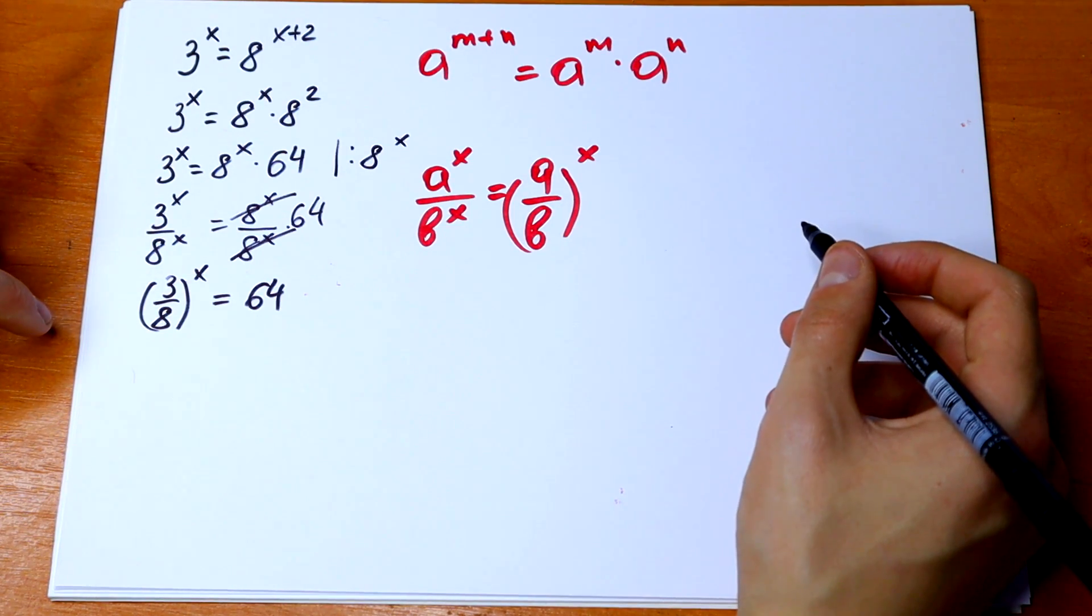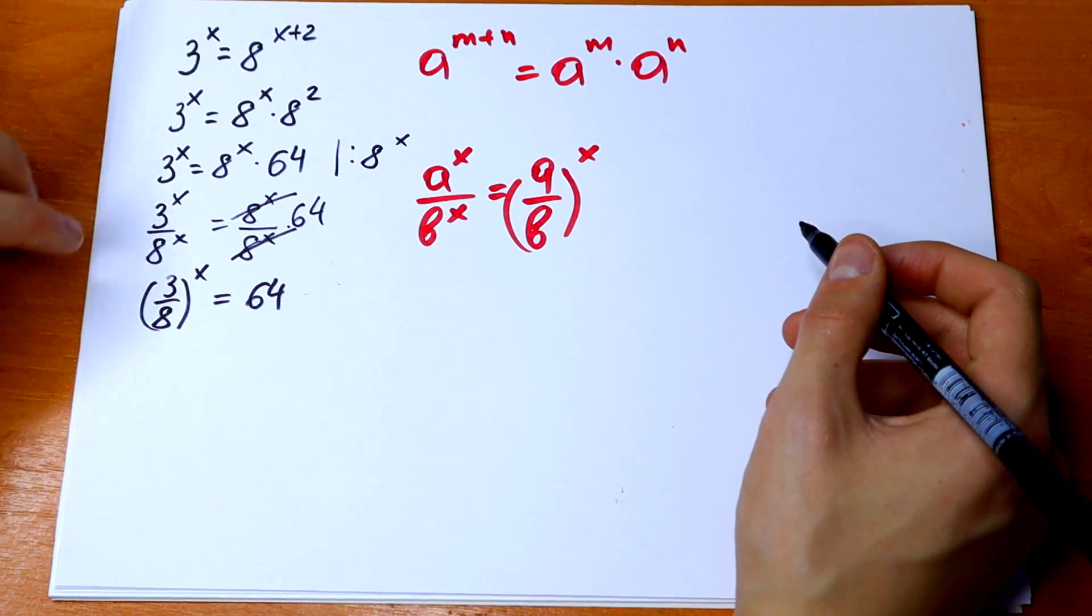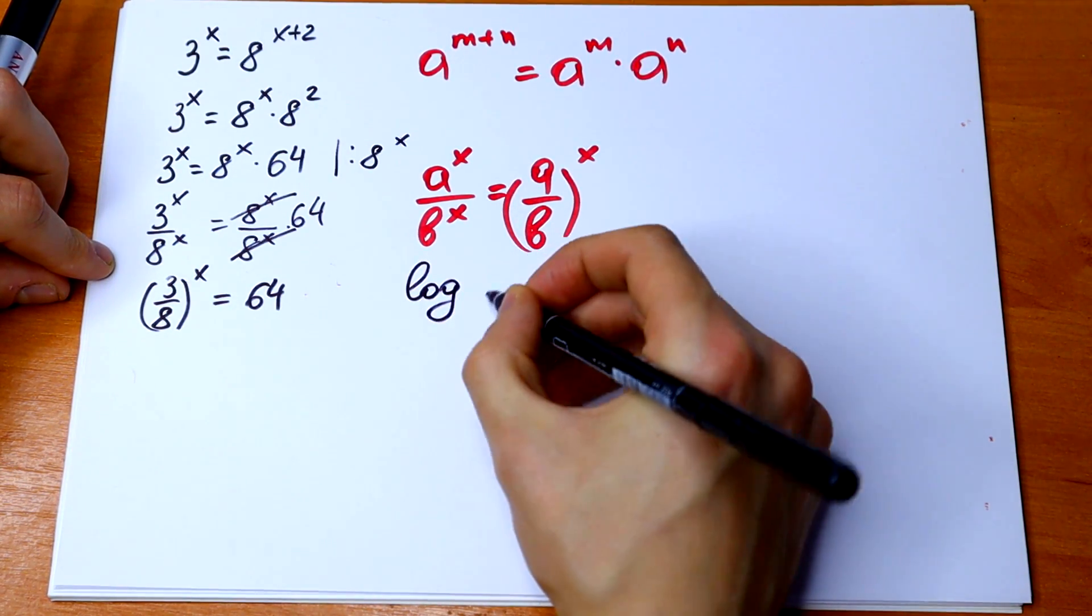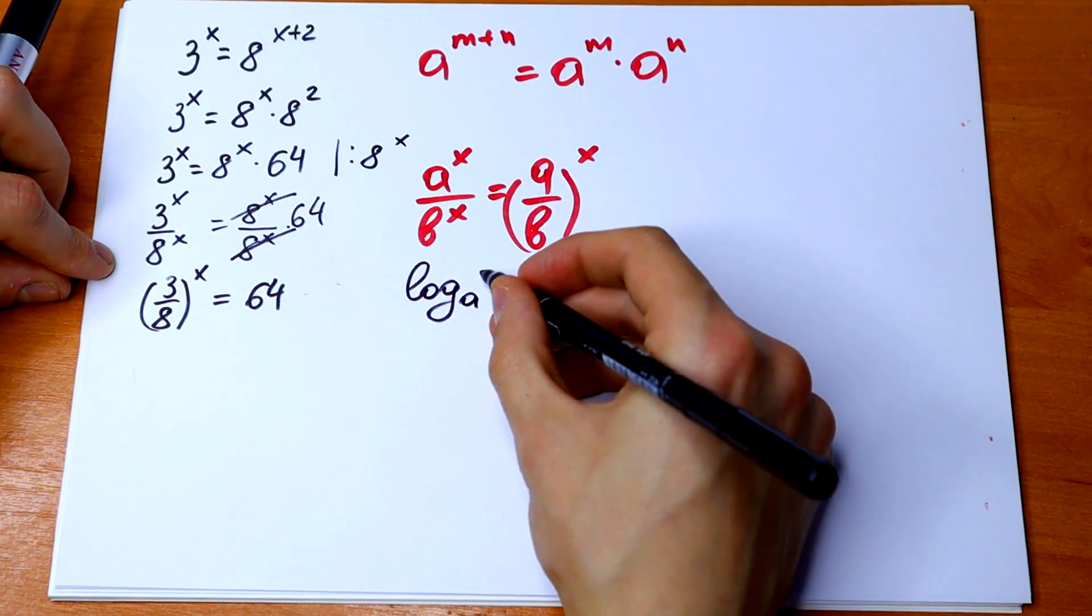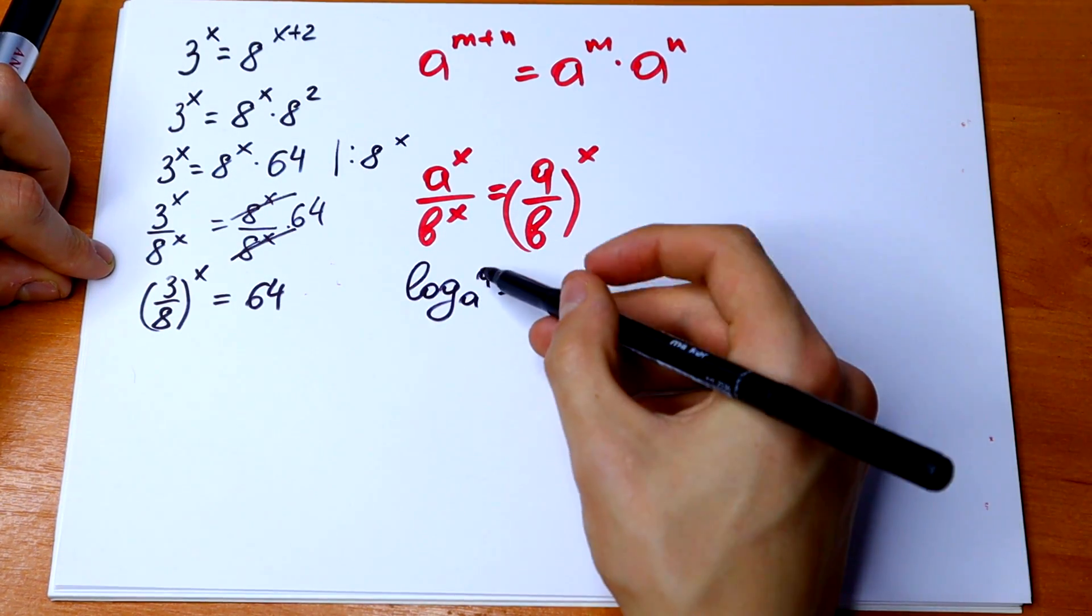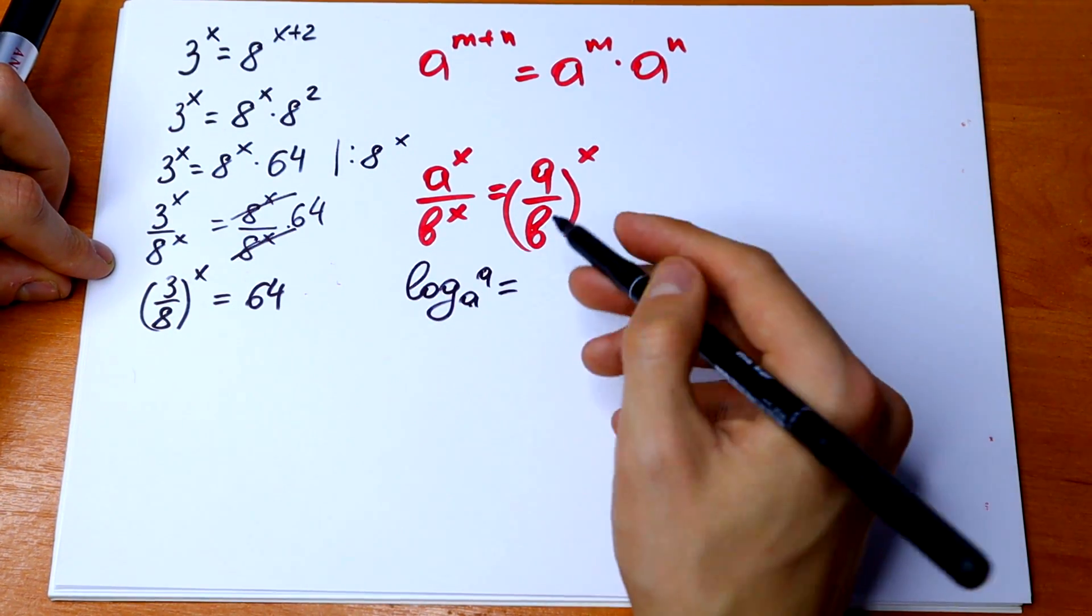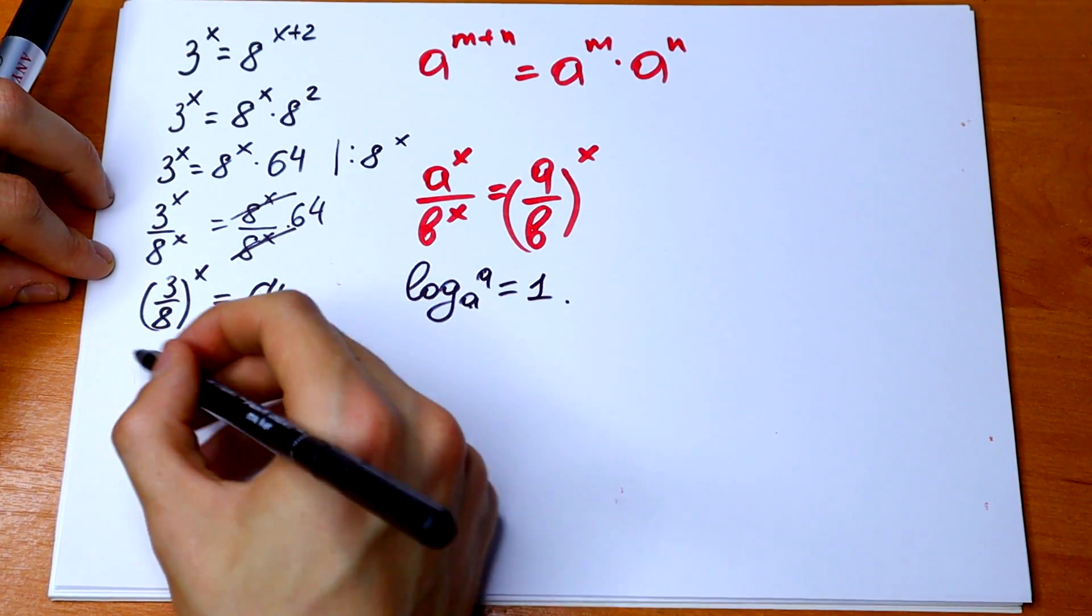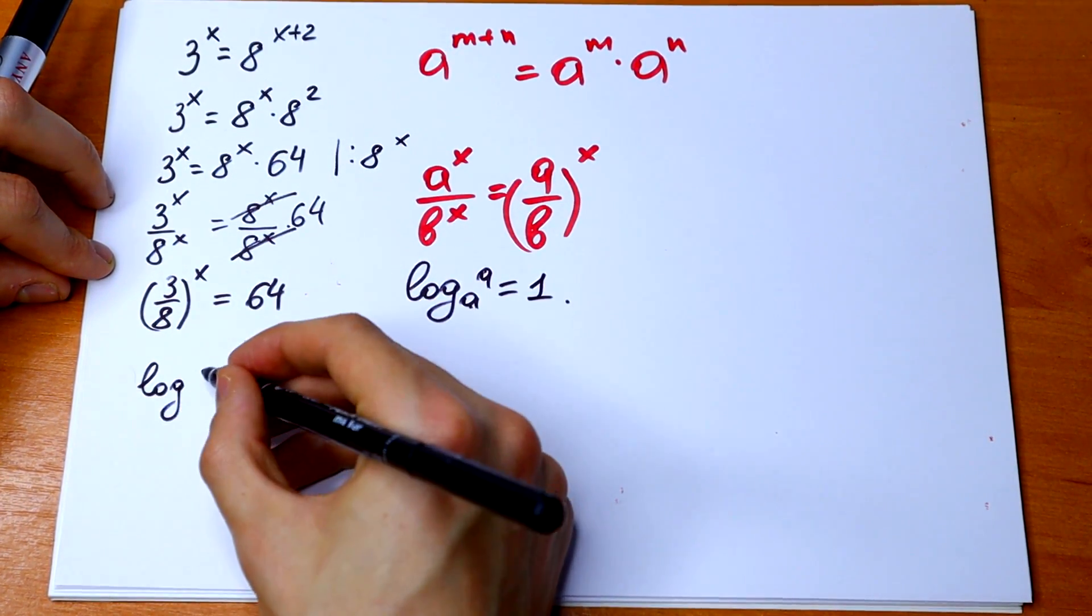But what base? The base should be 3 over 8 because we need to get our log situation when we have these different numbers. So it will be equal to 1. So let's take log from both of the sides.